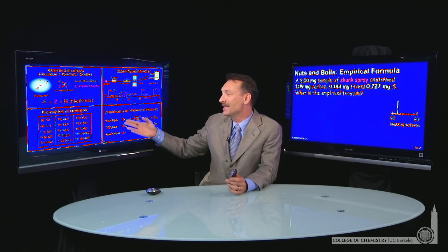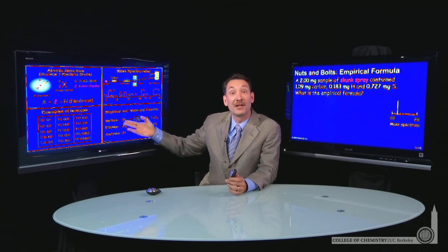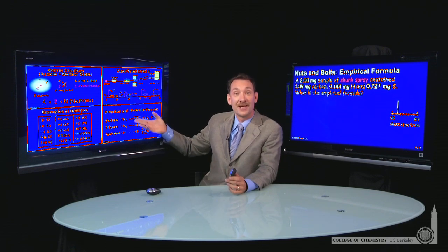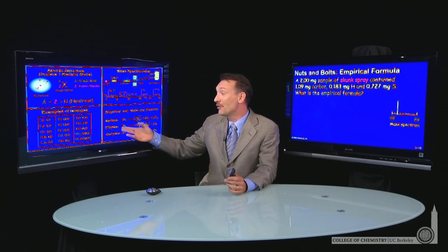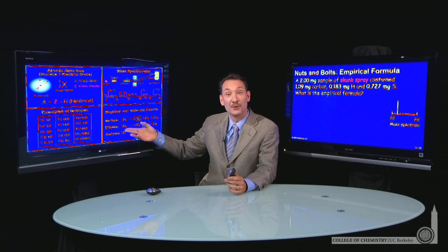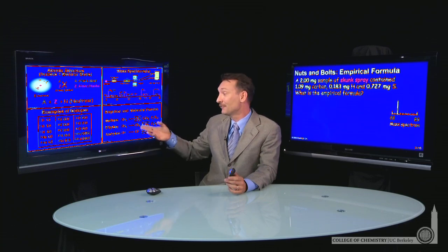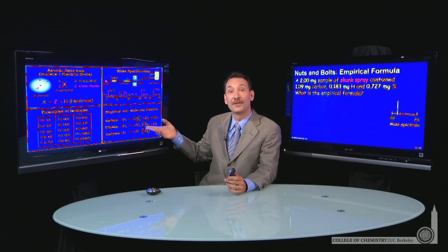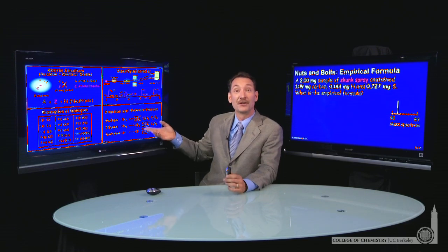So methane, CH4, the empirical formula and the molecular formula are the same. Ethylene, though, the ratio of carbon to hydrogen atoms is 1 to 2, but the actual molecular formula is C2H4. So there's a difference between the empirical and the molecular formula.